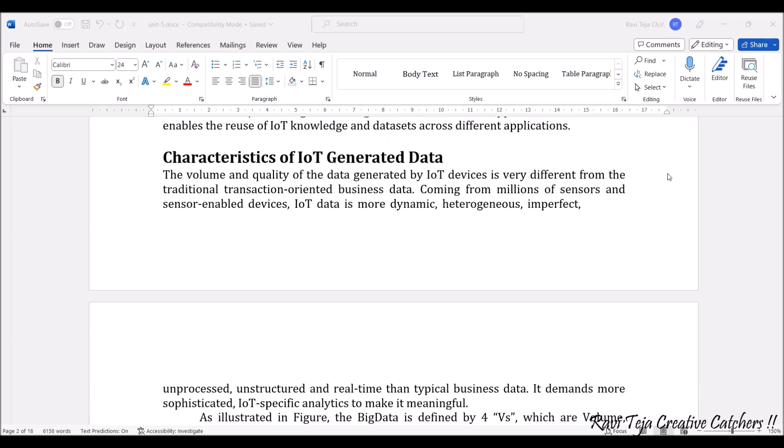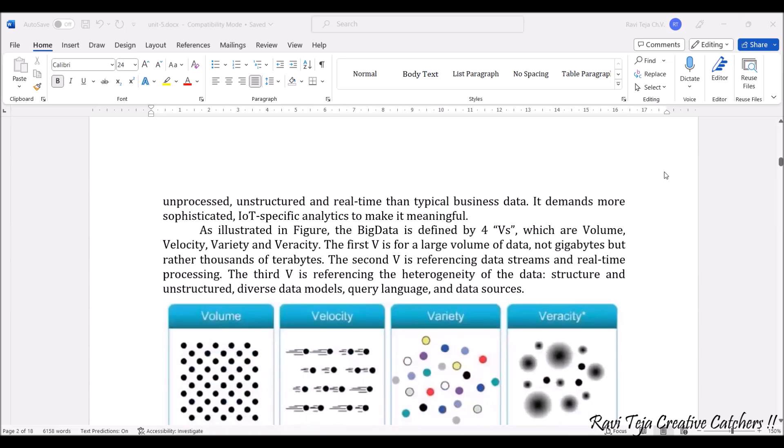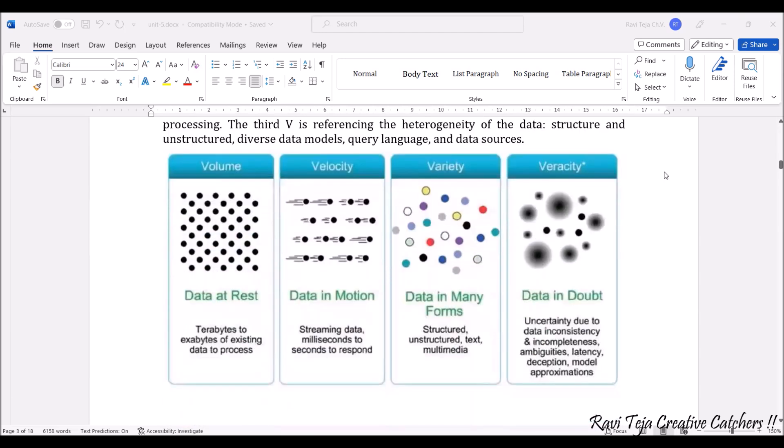If you see the graphical representation here, we can see data in different varieties: volume, velocity, variety, and veracity. Let's say data is at rest - this is how data at rest is represented with respect to volume. Coming to velocity, the data is in motion - streaming of data, responding of data, moving data from one point to another point. This is how data in motion is represented.